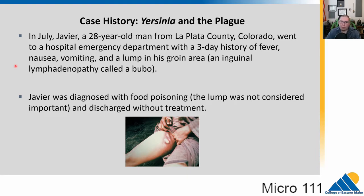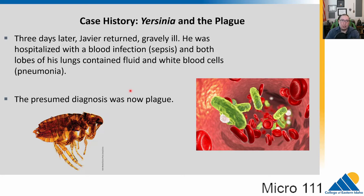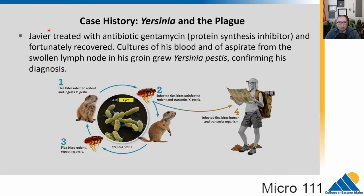They initially diagnose him with food poisoning, don't consider the lump important, and discharge him without treatment. Three days later he comes back very, very sick — nearly dying. He is hospitalized with a blood infection called sepsis, and both lobes of his lungs contain fluid and white blood cells: pneumonia. Taking everything into account, he is diagnosed with a presumptive plague and treated with the antibiotic gentamicin. He recovers. Cultures from his blood and the swollen lymph nodes — like the one in his groin — grow Yersinia pestis, the causative bacteria.